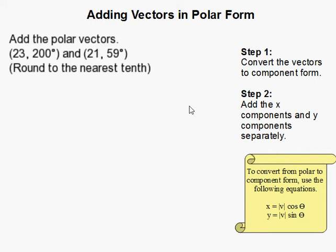How to add vectors when they're in polar form. Now we're given two vectors, and they look a little different because they have these degree symbols here. So what we need to do is convert them into component form, and after we do that, everything's really easy.